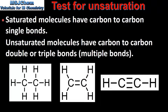Saturated molecules have carbon to carbon single bonds, whereas unsaturated molecules have carbon to carbon double or triple bonds. On the left we have the full structural formula of C2H6, which is ethane. It has a carbon to carbon single bond, therefore it is a saturated molecule.